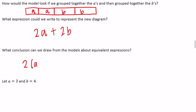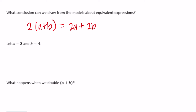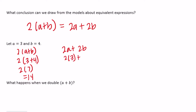Let a equal 3 and b equal 4 to verify. For 2(a+b): 2 times (3+4) = 2 times 7 = 14. For 2a plus 2b: 2 times 3 plus 2 times 4 = 6 plus 8 = 14. Both give 14, confirming they're equal. Conclusion: when we double (a+b), we double both a and b.